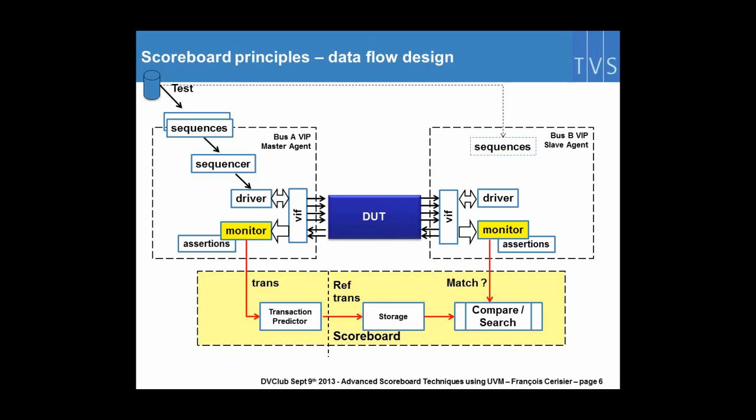On the other side, we've got the slave agent which monitors the transaction out of the design and sends it to the scoreboard. The scoreboard is then responsible to check whether or not this transaction coming at the slave interface is matching in regards to what happened in the past. It will search into the storage space whether or not there is a reference transaction matching.